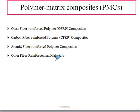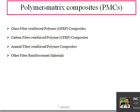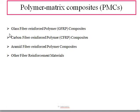Now let us see the classifications of polymer matrix composites. The classifications are: glass fiber reinforced polymer, known as GFRP; carbon fiber reinforced polymer, that is CFRP; aramid fiber reinforced polymer composites; and some other classes of fiber reinforced materials.